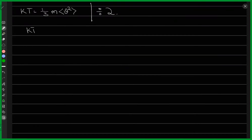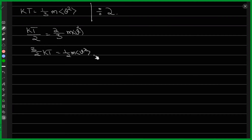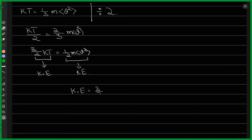Dividing the equation by two: (kT/2) = (1/3) m⟨v²⟩. Rearranging gives: (3/2) kT = (1/2) m⟨v²⟩. This thing on the right — (1/2) mv² — is the kinetic energy. Since there's an equals sign, the left side is also a kinetic energy. Hence we deduce that the kinetic energy of one particle of gas is given as (3/2) kT.